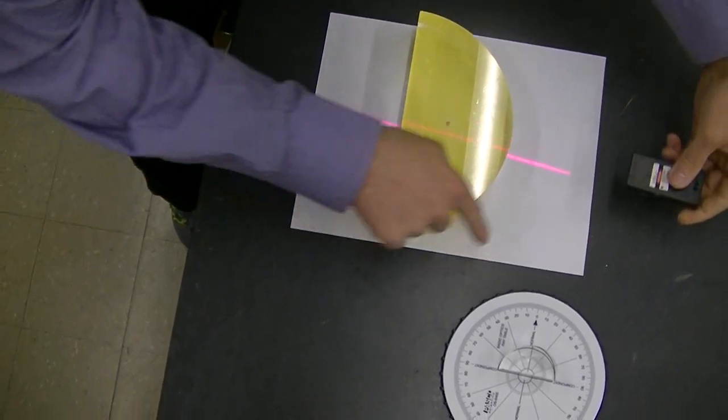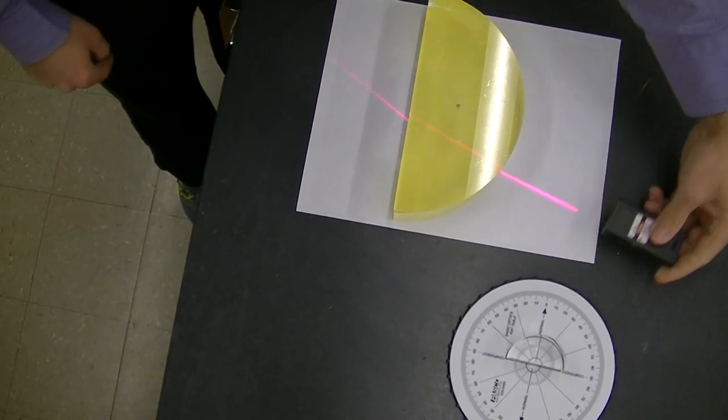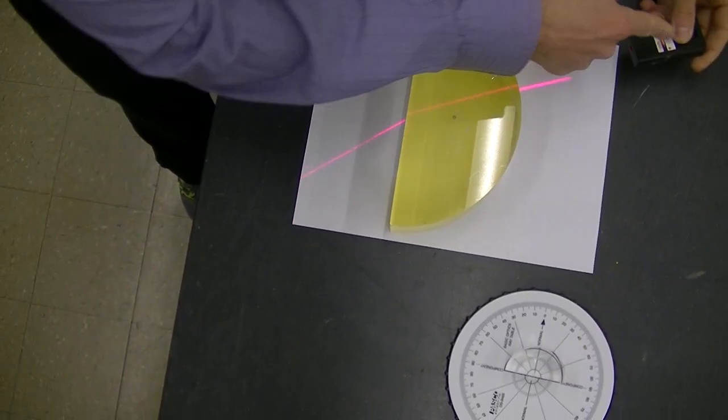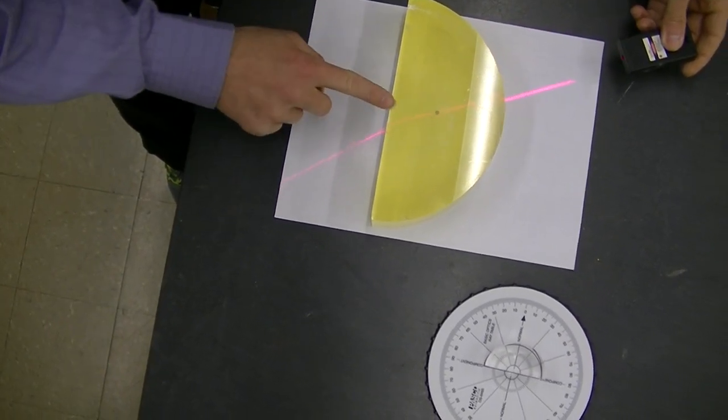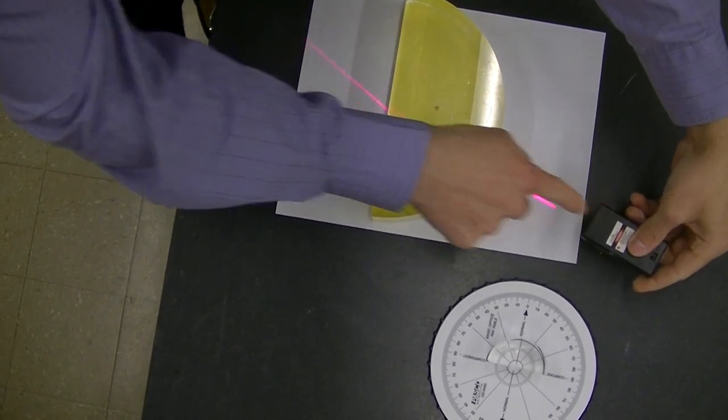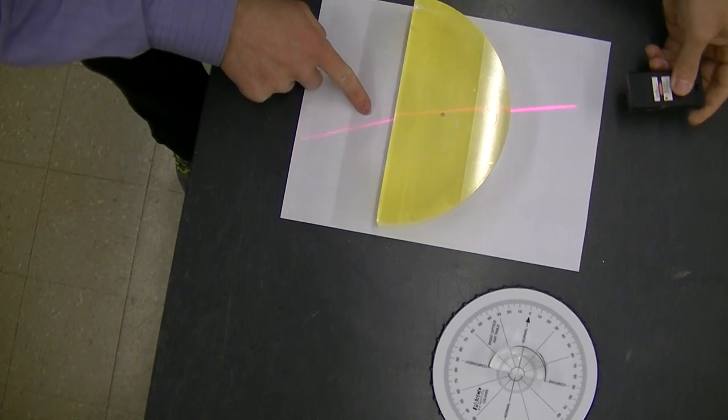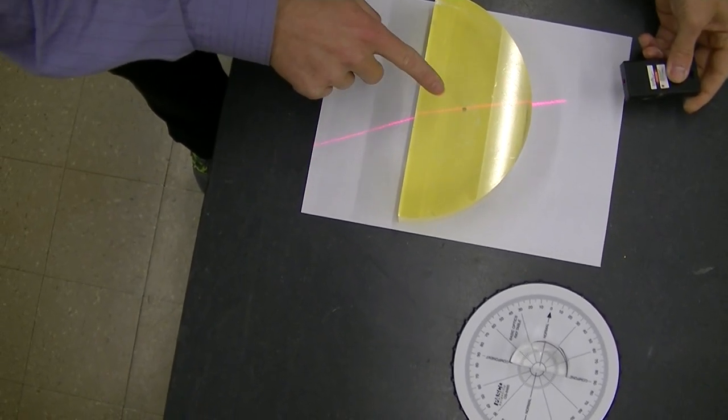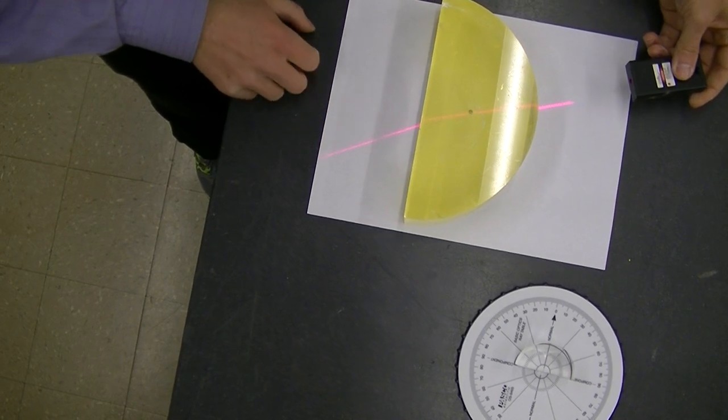So this is a really nice geometry, this D-shaped lens, because there's no way that I can turn this so that I don't get this laser beam coming in directly on normal. So as long as I'm shooting it at the center of this, this is always normal. And what you can see is the only refraction I care about is the one where it leaves, in this case, the acrylic, into air.